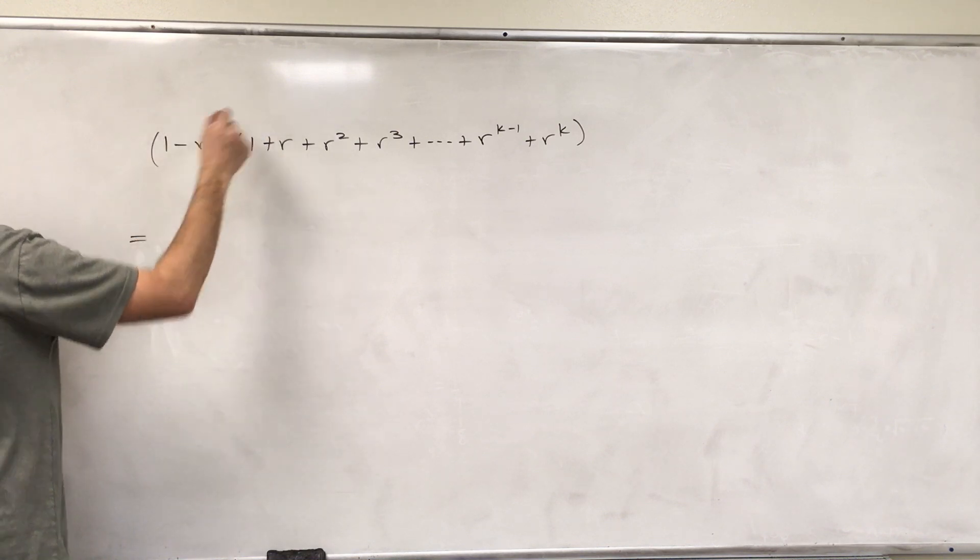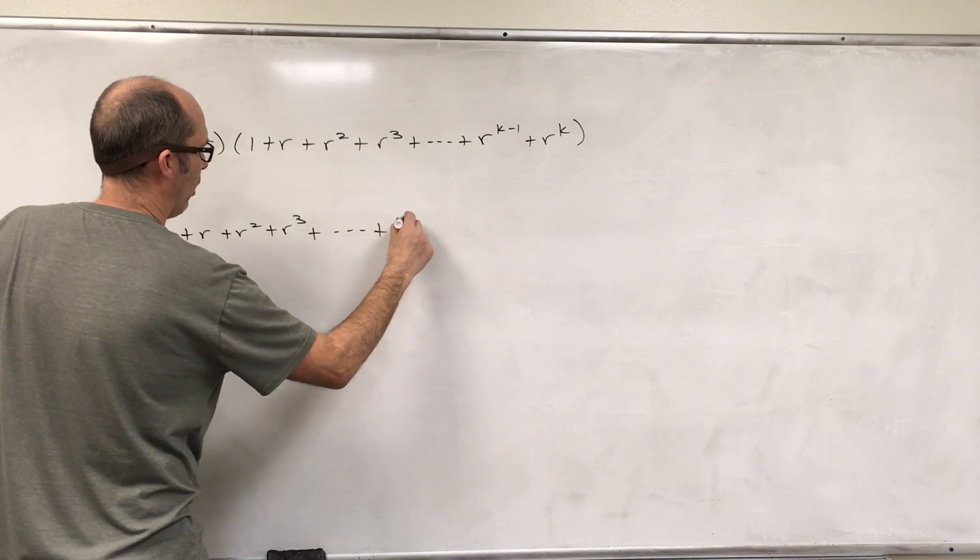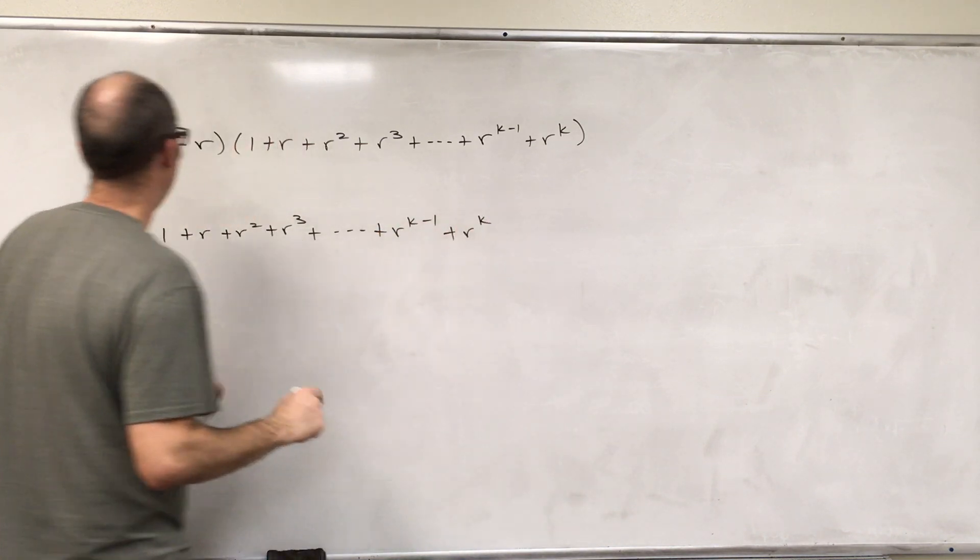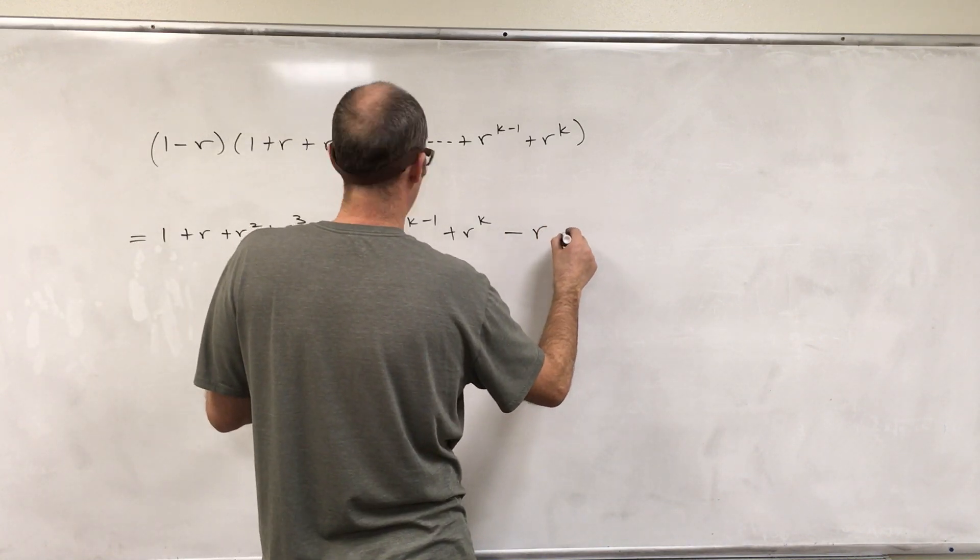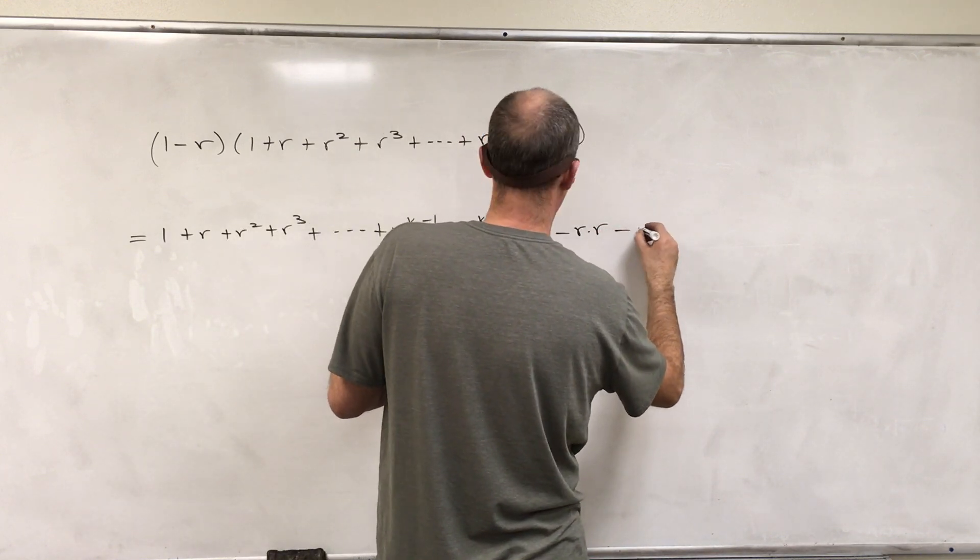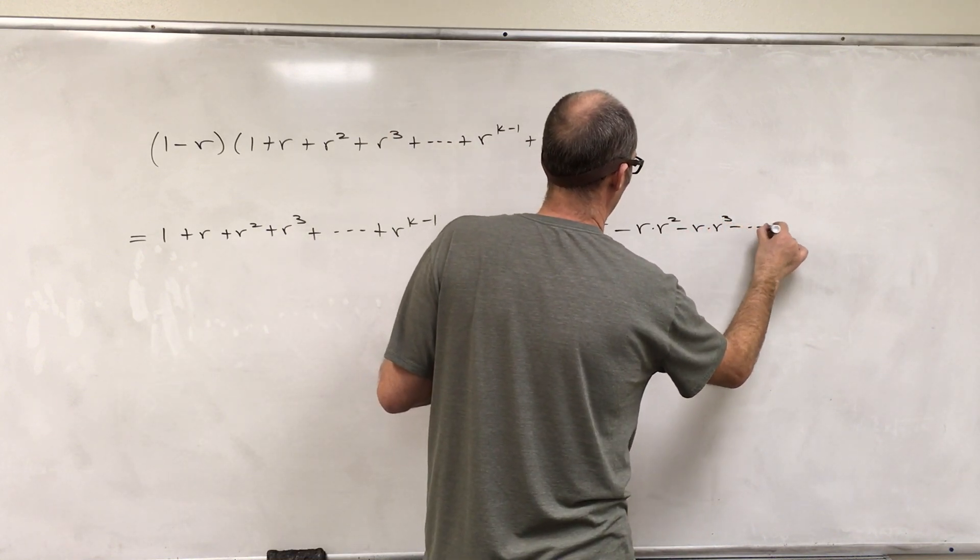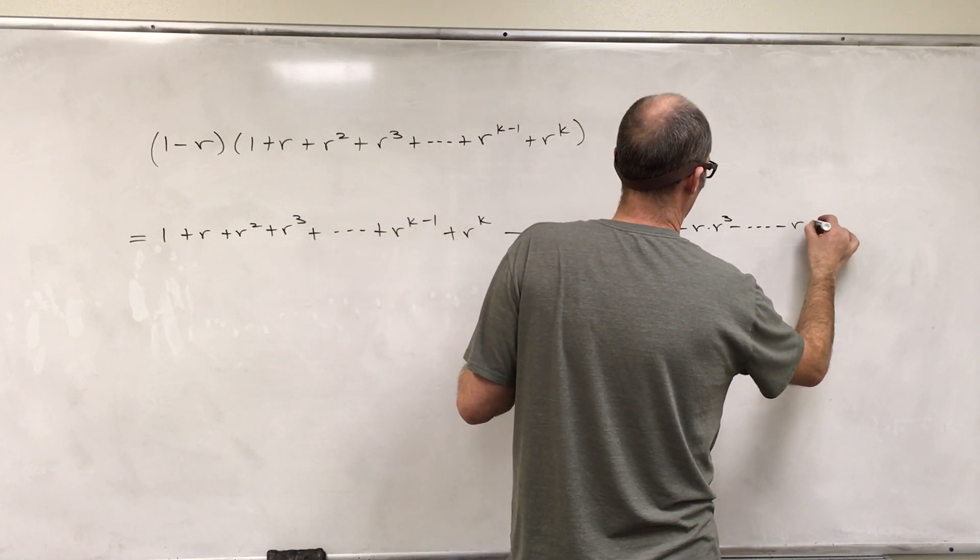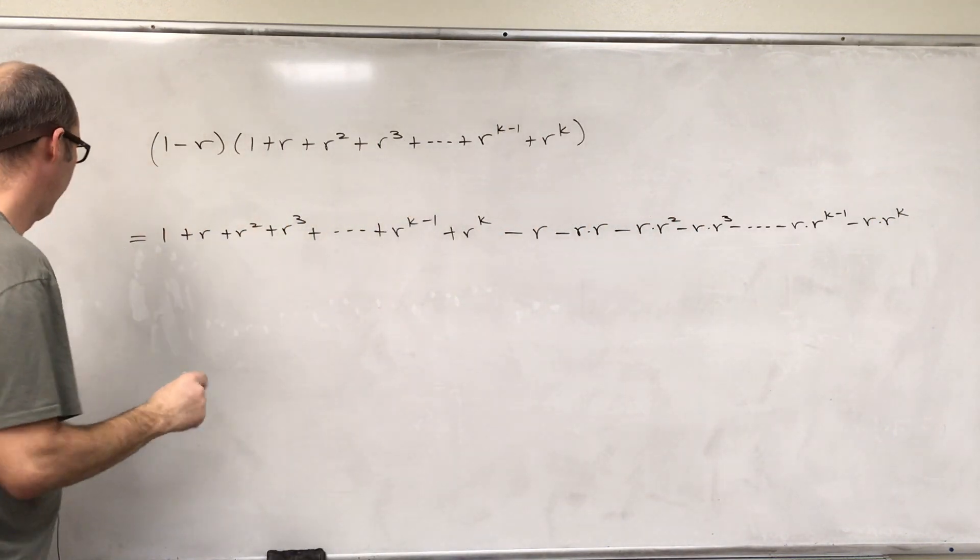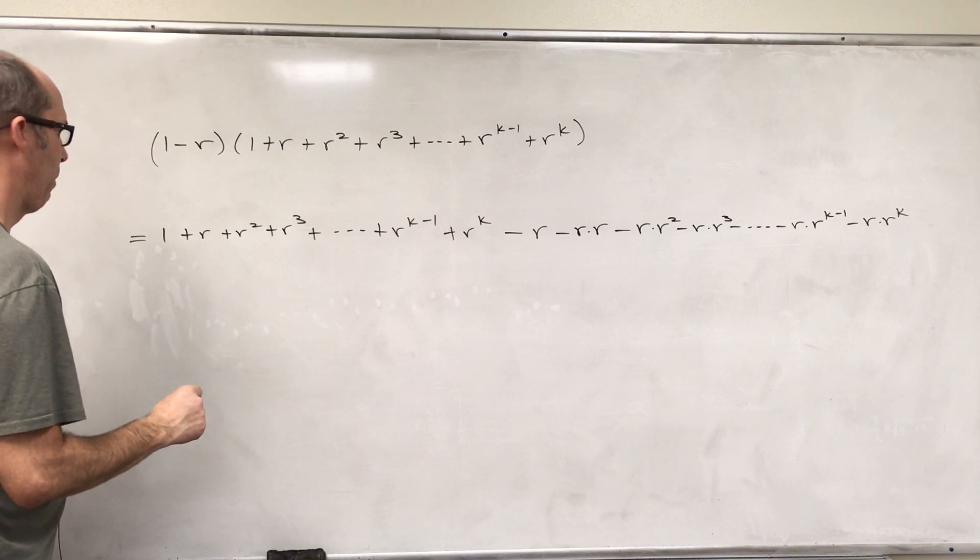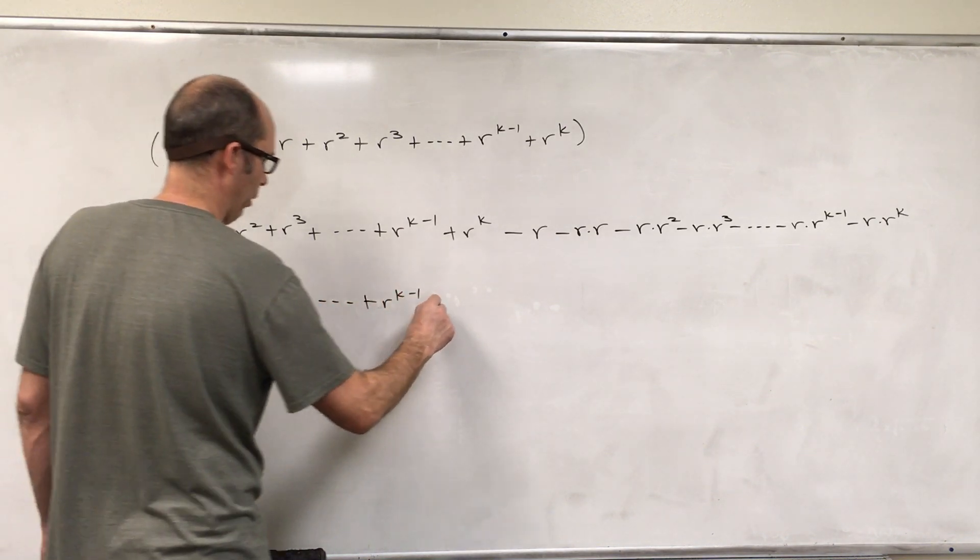So, we'll do a distributive property. You got 1 times all those things. You got 1 plus R plus R squared plus R cubed plus R to the K minus 1 plus R to the K. And then negative R times each of those. So you got negative R minus R times R minus R times R squared minus R times R cubed minus R times R to the K minus 1.